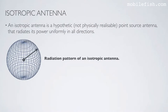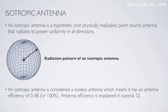An isotropic antenna is a hypothetical, not physically realizable point-source antenna that radiates its power uniformly in all directions. This is a radiation pattern of an isotropic antenna. An isotropic antenna is considered a lossless antenna, which means it has an antenna efficiency of 0 dB, or 100%. Antenna efficiency is explained in tutorial 32.